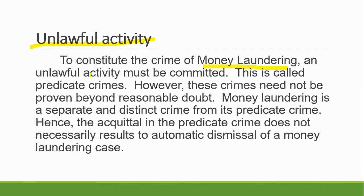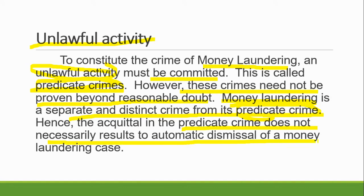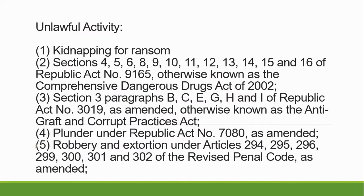To constitute the crime of money laundering, an unlawful activity must be committed — this is called the predicate crime. However, these crimes need not be proven beyond reasonable doubt. Money laundering is a separate and distinct crime from its predicate crime. You can be charged with predicate crime like drugs and money laundering at the same time — there is no double jeopardy. Hence, acquittal in the predicate crime does not necessarily result in automatic dismissal of the money laundering case. Even if acquitted of drug trafficking, if you can't explain your wealth, you can still be convicted.